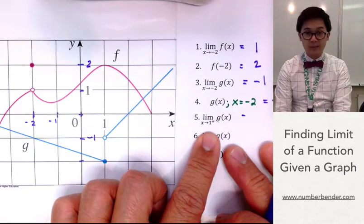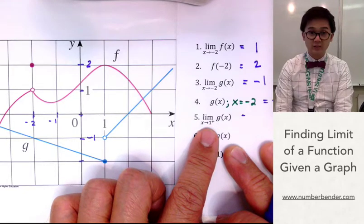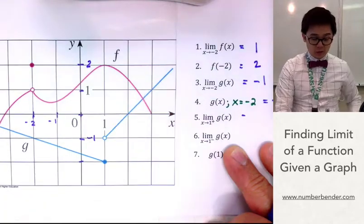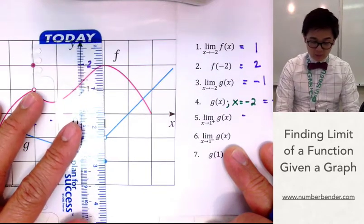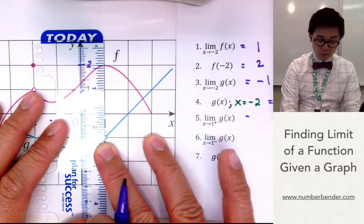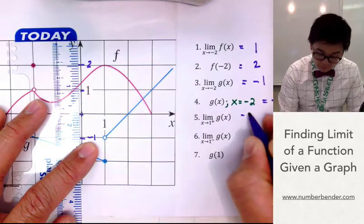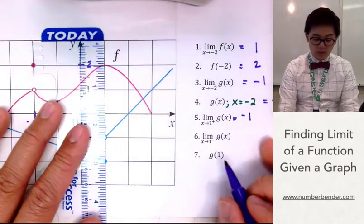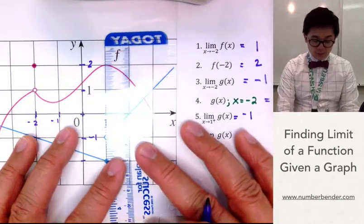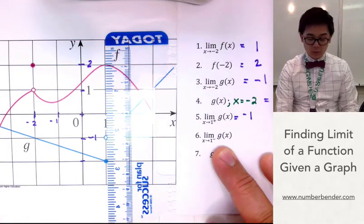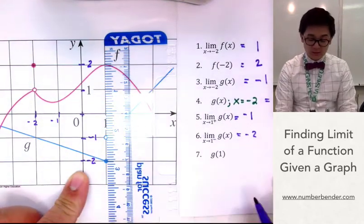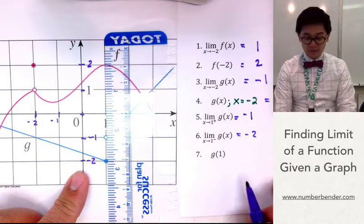For number 5, we're looking for a one-sided limit. The plus sign means the value of g of x as x approaches 1 from the right. Coming from the positive side to x equal to 1, the value of y is approximately equal to negative 1. For number 6, coming from the left, the value of y will be different — it will be equal to negative 2. So the value of y is negative 2 as x approaches positive 1 from the left for g of x.